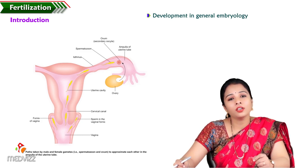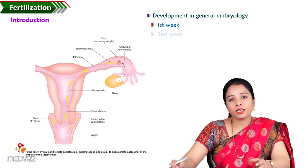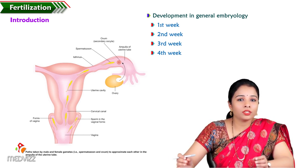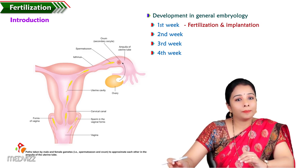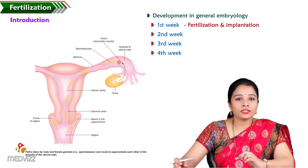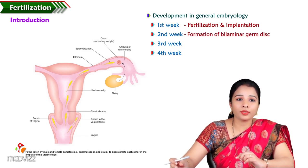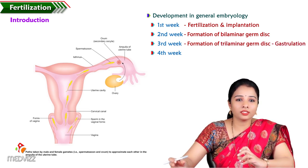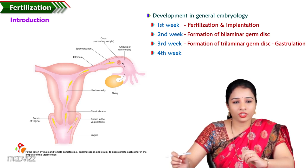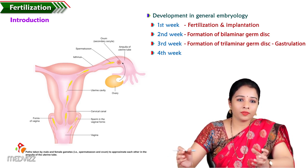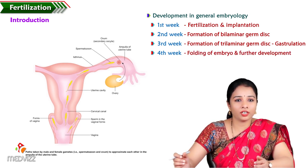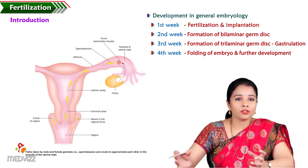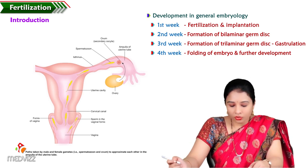Under general embryology, development is covered week by week: first week, second week, third week, and fourth week. In the first week we learn about fertilization and implantation. In the second week it is the formation of the bilaminar germ disc. The third week covers the trilaminar germ disc — that is, the formation of three germ layers called gastrulation. The fourth week covers the folding of the embryo and further development, followed by systemic embryology.